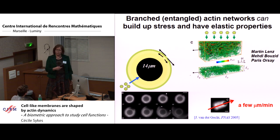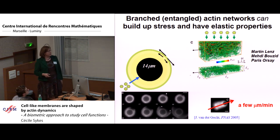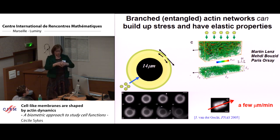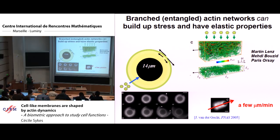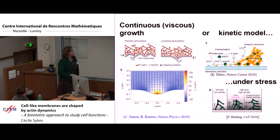This experiment showed we have elastic properties in the branched network. The elastic stress buildup depends on the concentration of branches. In collaboration with Martin Lenz's group in Orsay, simulations show that with many branches we have entanglements. Red branches are under stress, green have zero stress, blue are in compression. Lower branch density produces less stress buildup.